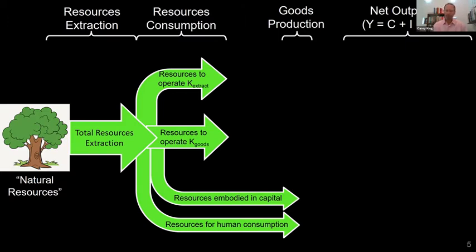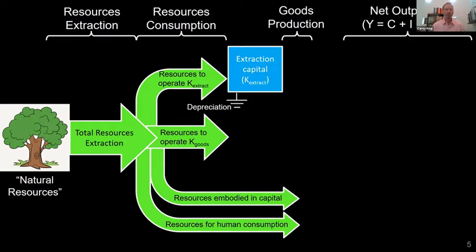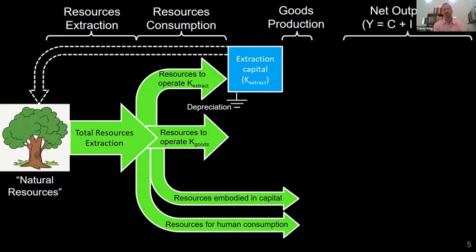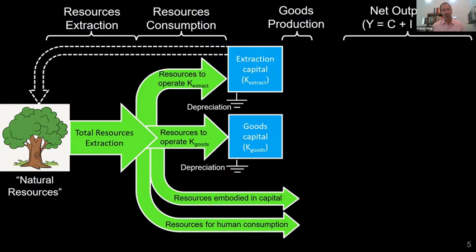This resource gets extracted and there are four main flows for which it is used. First, there is an extraction sector with a set of capital — like oil drilling rigs — whose job is to extract natural resources. Second, there is a capital goods sector; the job of this capital is to make more capital. These are machines that make machines — manufacturing. So those are the two basic sectors of the model.